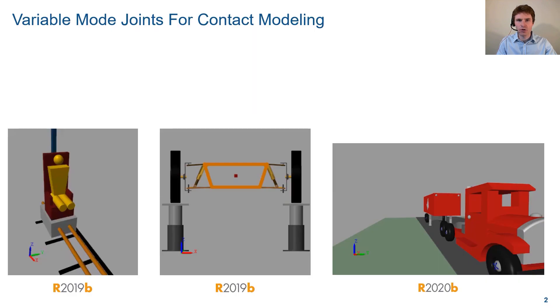Specifically, I'm going to talk about the use of variable mode joints for abstracting the level of detail of contact modeling in package delivery drones.